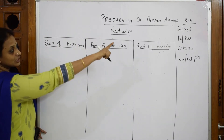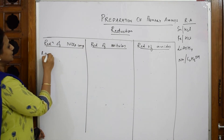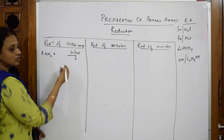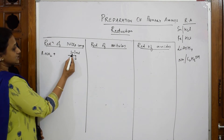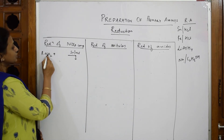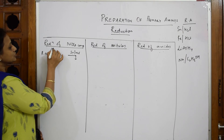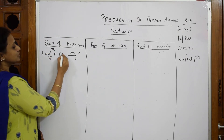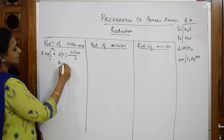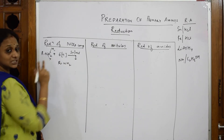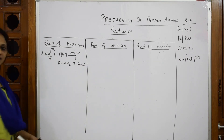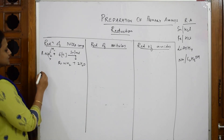For reduction of nitro compounds, the general formula is R-NO₂. Using a reducing agent like Sn/HCl or Fe/HCl, when you find this reagent in an exam it means you have to add hydrogen. So you remove the oxygen and add hydrogen. Add six hydrogens: two will go to form R-NH₂, and the remaining four come out as two water molecules with the oxygen. This is how you prepare a primary amine.